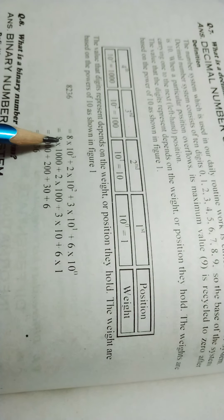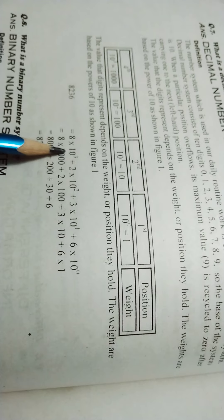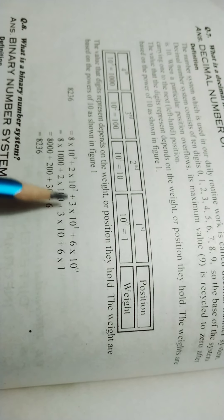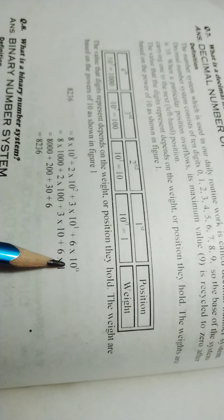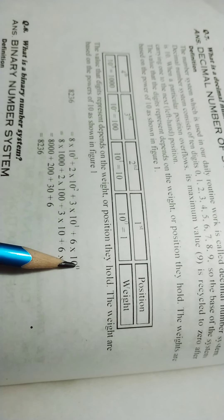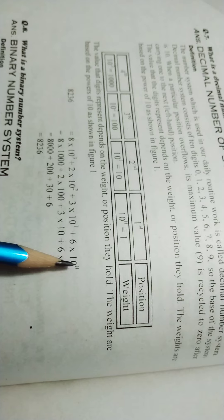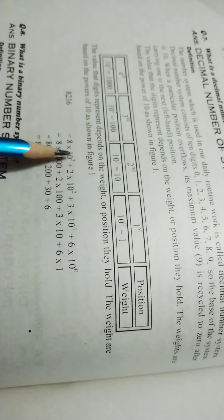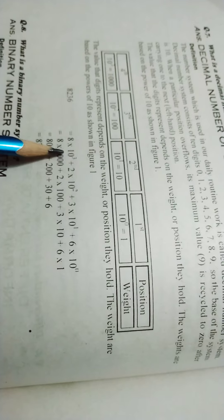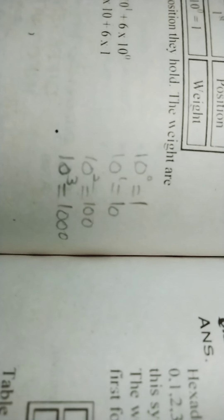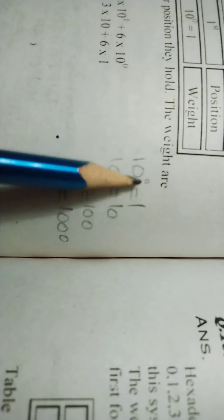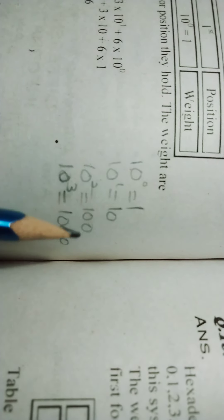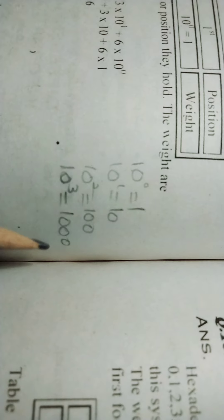This is multiplied by 10 because it's decimal. 10 to the power 0, 10 to the power 1, 10 to the power 2, 10 to the power 3, which means thousand.